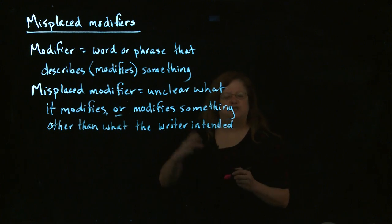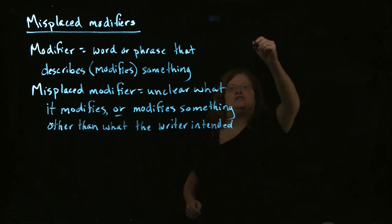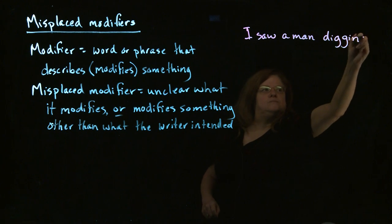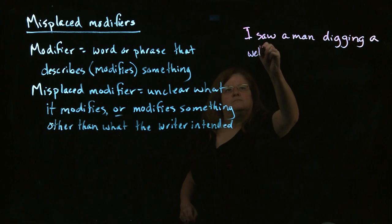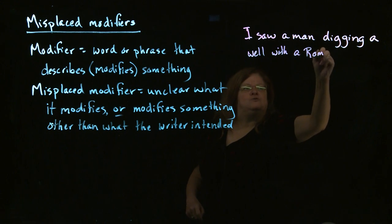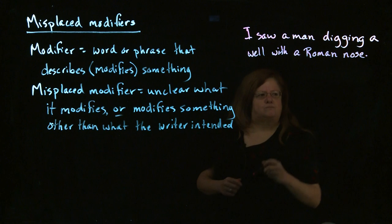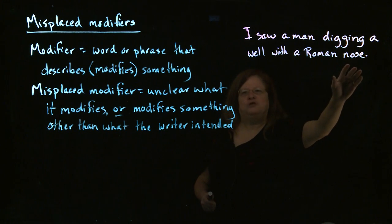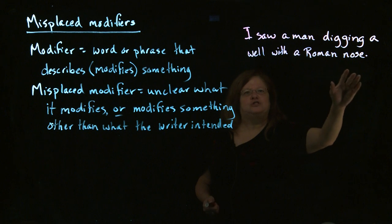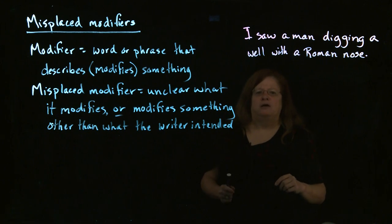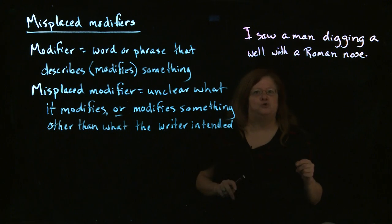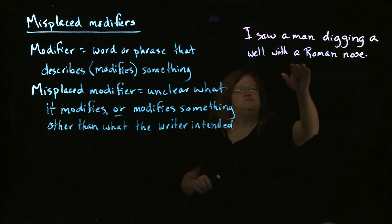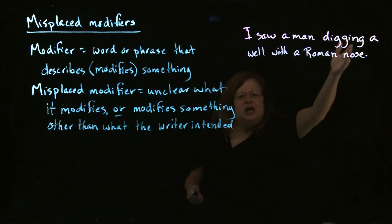One classic misplaced modifier is: "I saw a man digging a well with a Roman nose." When we look at this sentence, we have the prepositional phrase "with a Roman nose" — that's our modifier. When we first read this sentence, it seems to say that the well has a Roman nose, because that's what's closest to the modifier. Then you look a little longer and say, wait — the well doesn't have a Roman nose. Rather, the man was digging with a Roman nose.